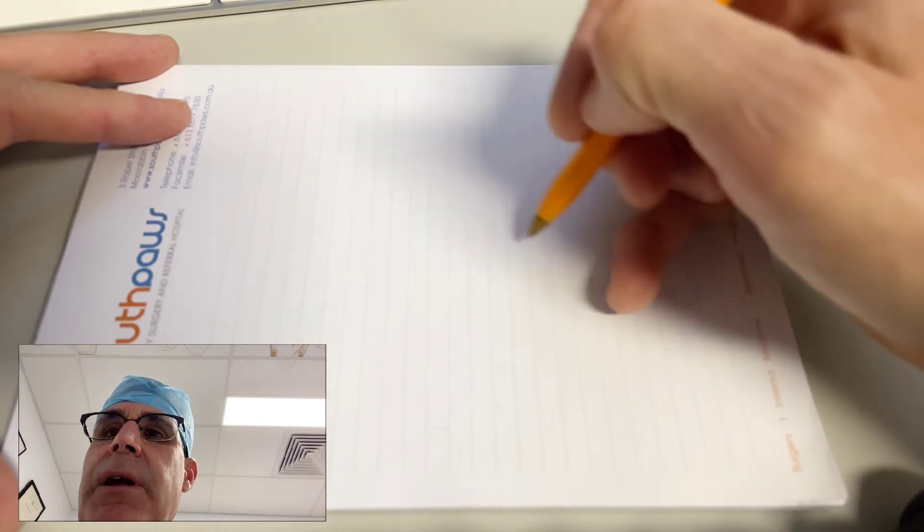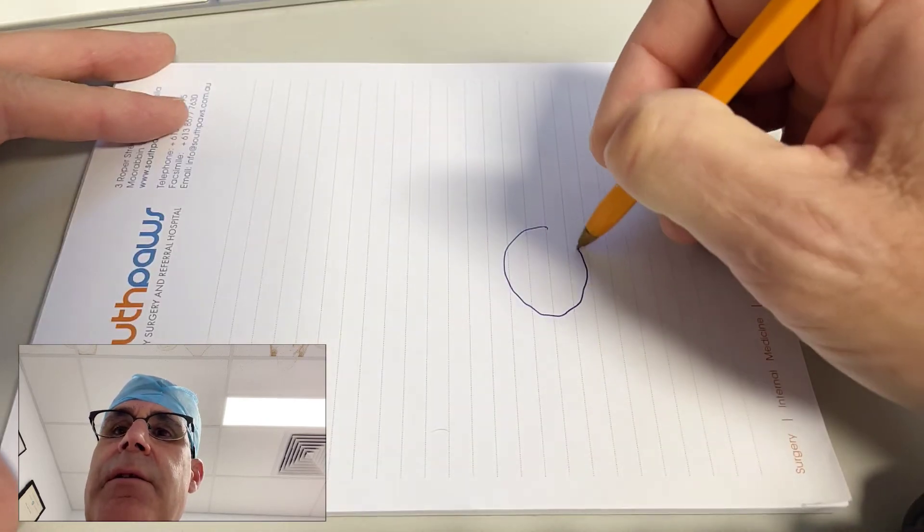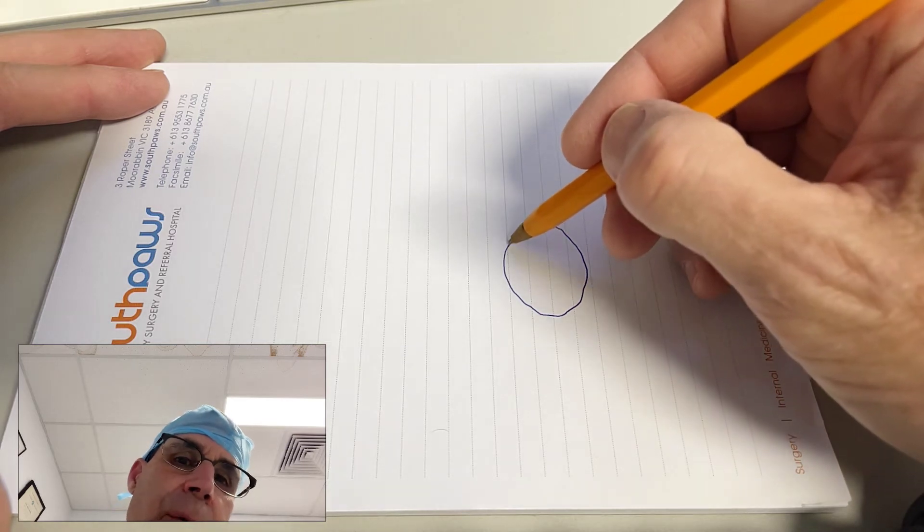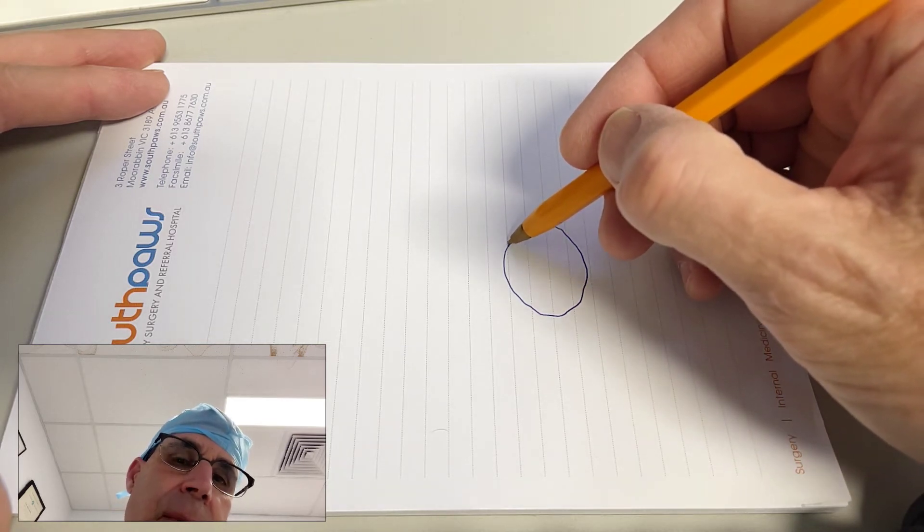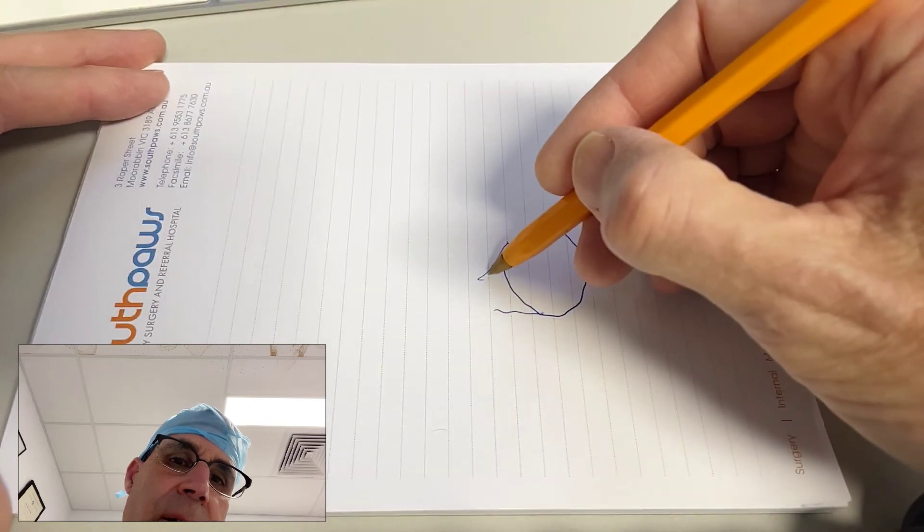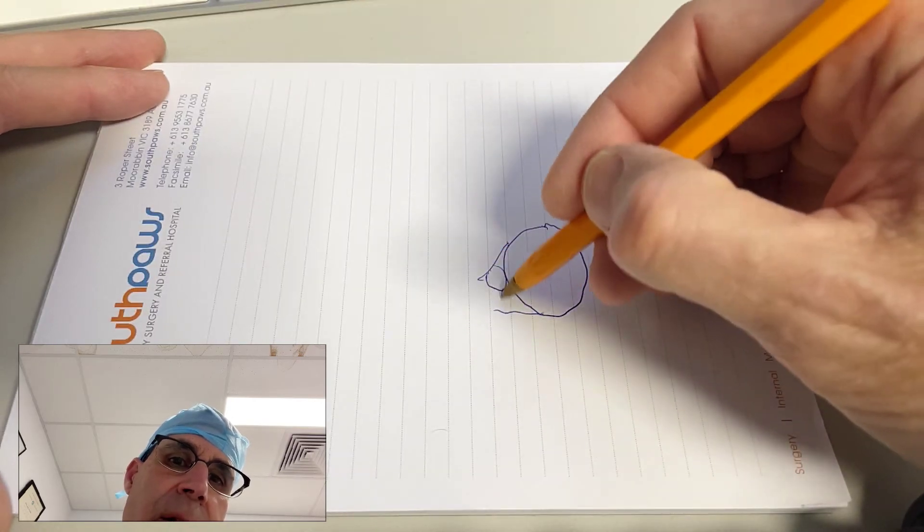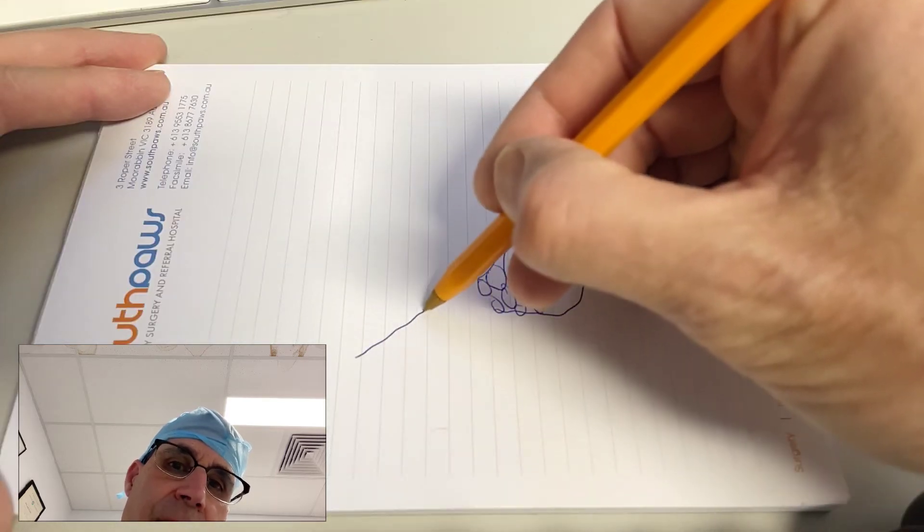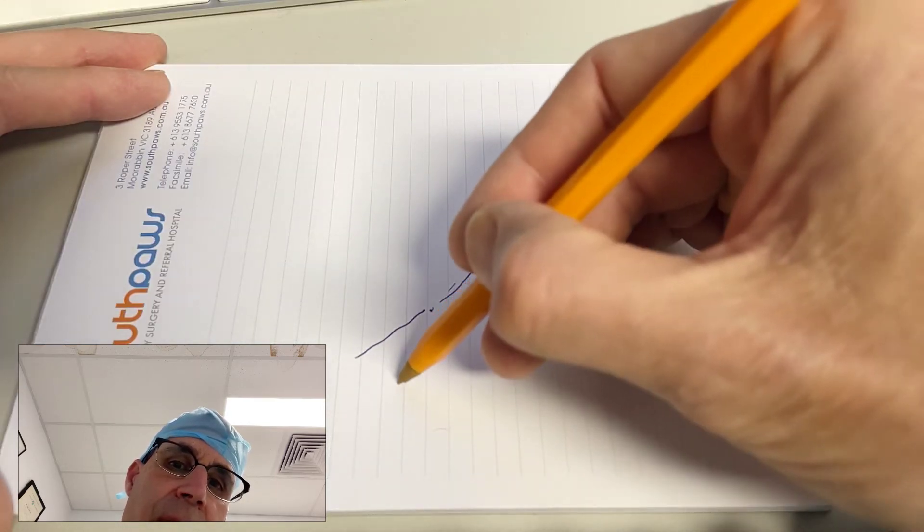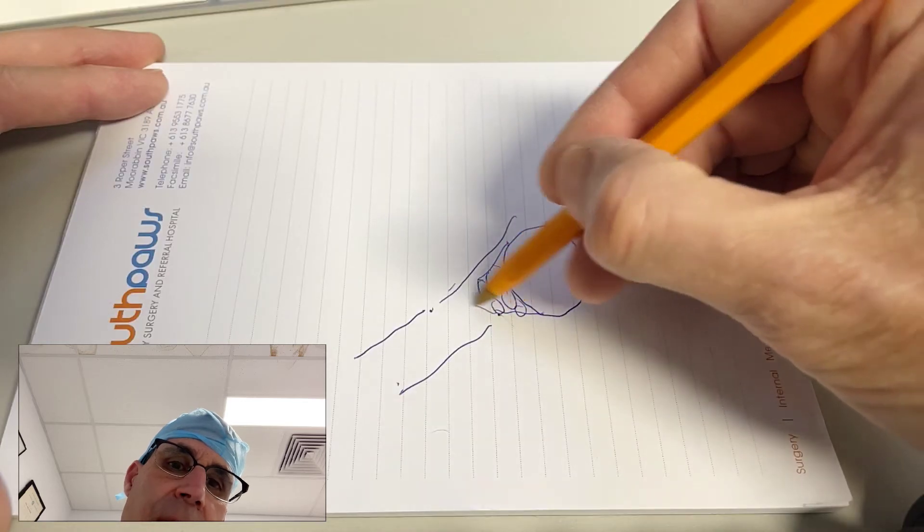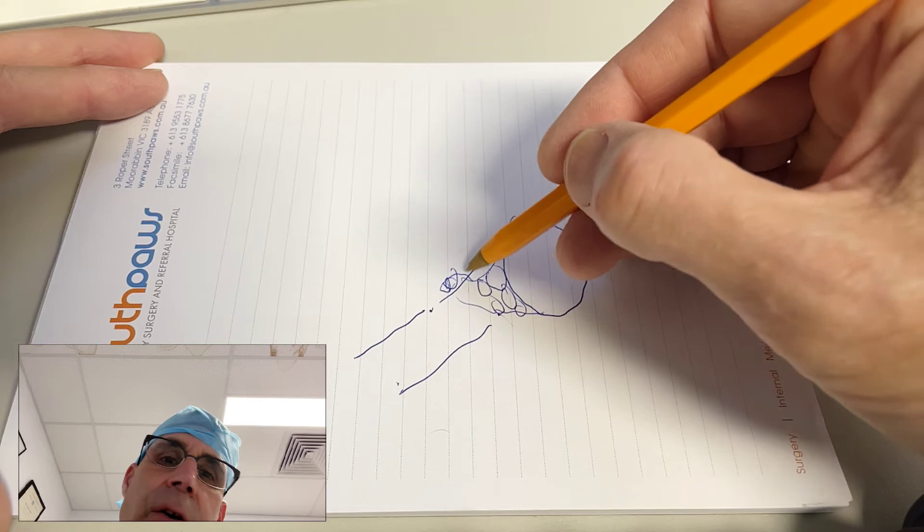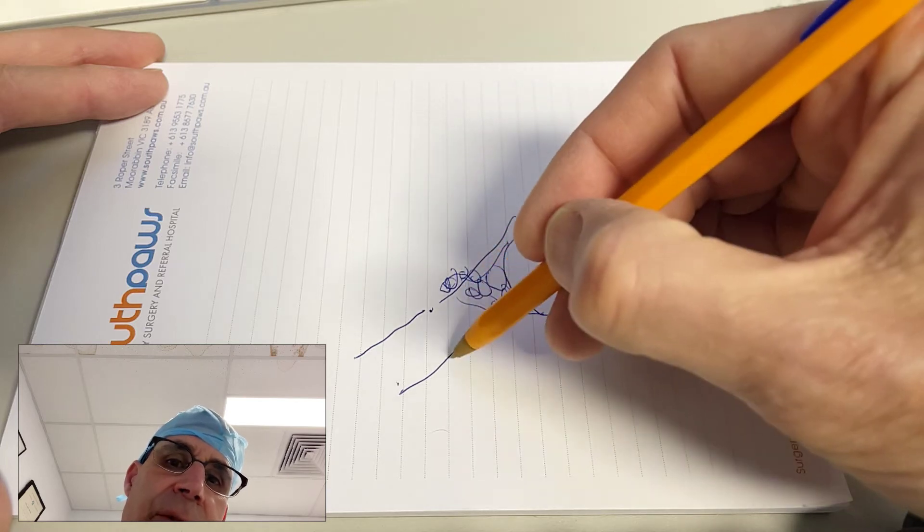So if we look here, we have the salivary gland sitting here, which is the monostomatic portion of the mandibular salivary gland, and then we've got the polyostomatic portion here. There's the digastricus muscle sitting here underneath the jaw, and the polyostomatic portion travels over the digastricus muscle and then comes out medially here along the sublingual salivary gland.